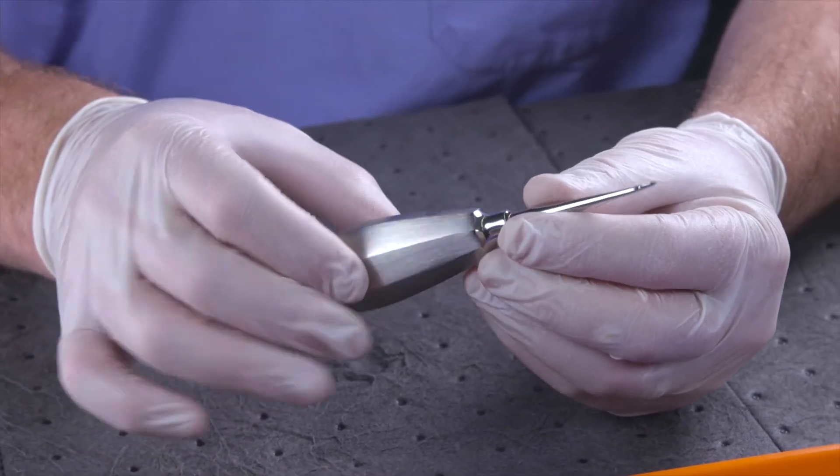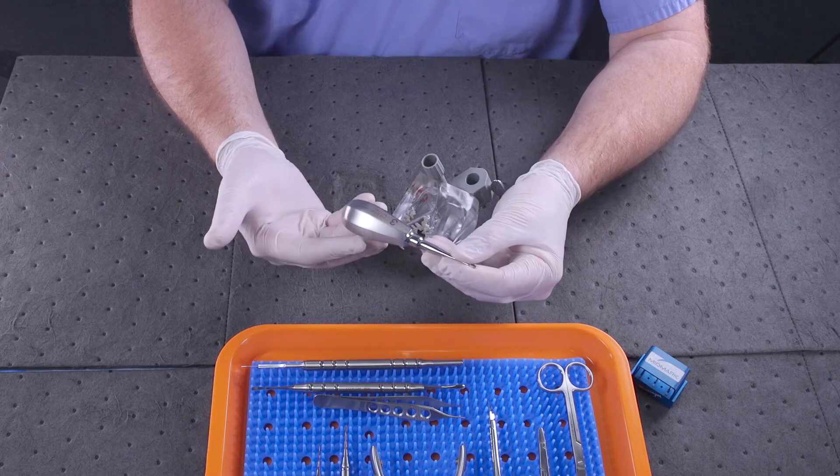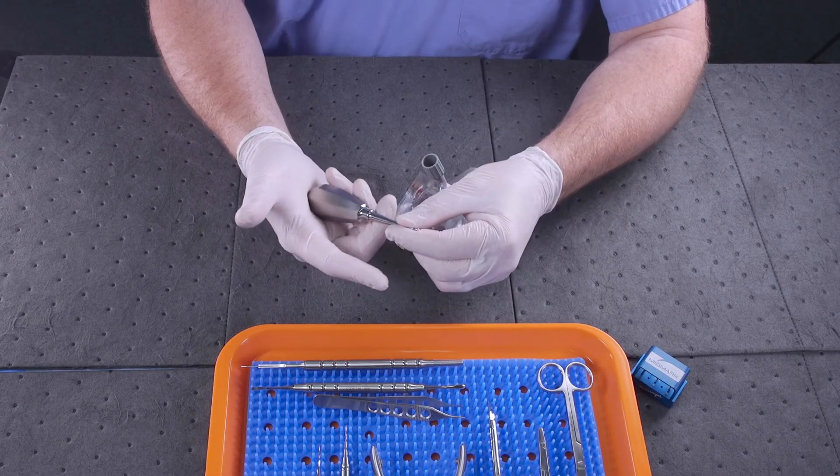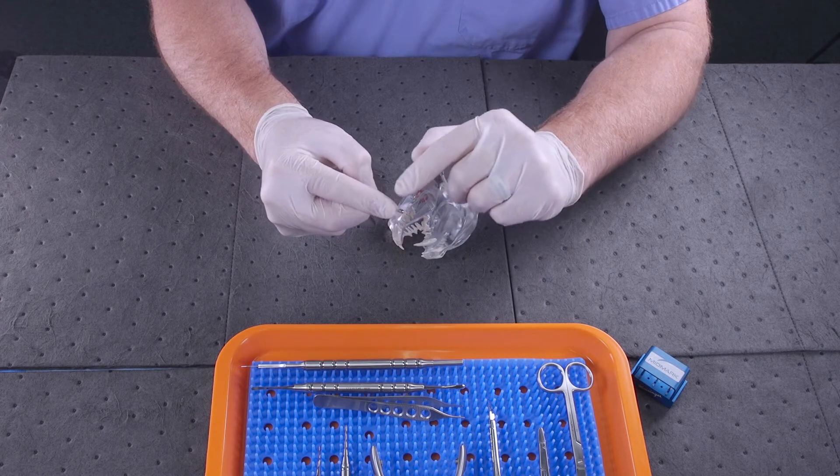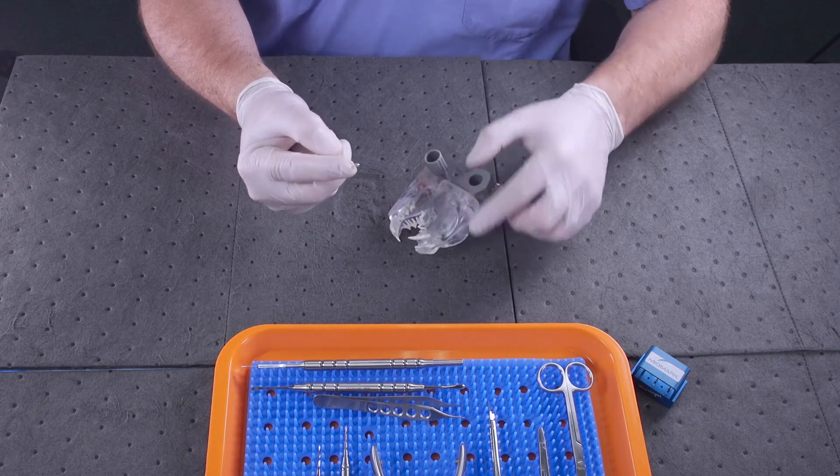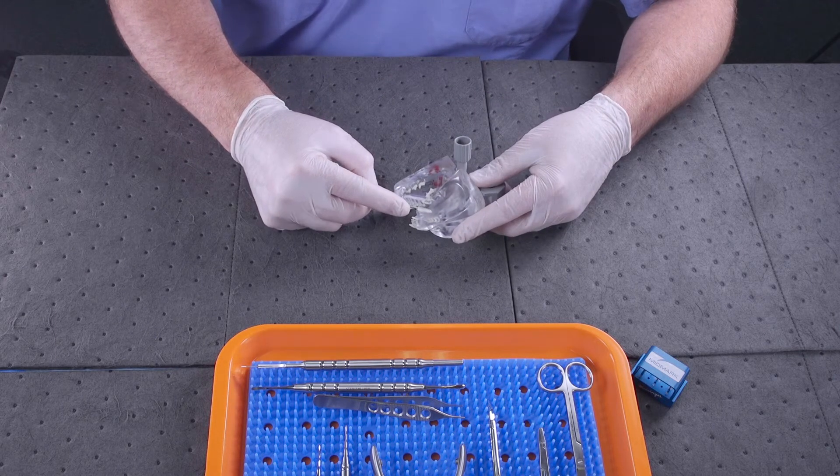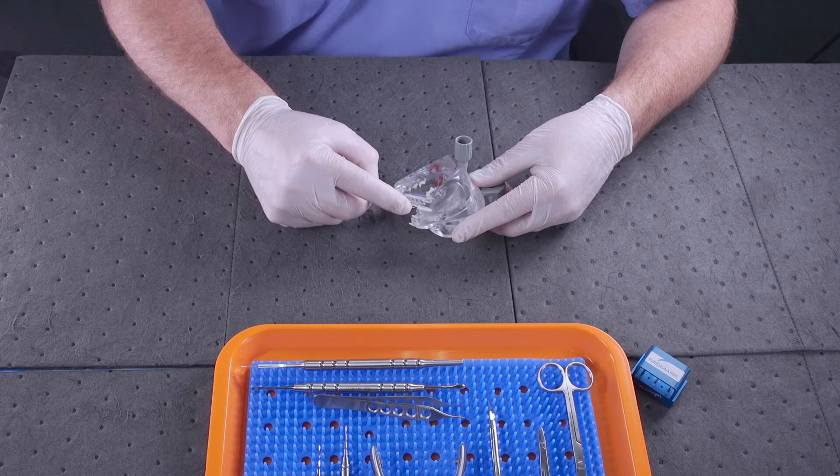When I take the number three winged elevator, I put the bulb in the palm of the hand, grasp firmly, and choke up with my finger. Then I take the instrument's sharpened blade and go between the root and the bone into the periodontal ligament space. I push in as I oscillate back and forth.